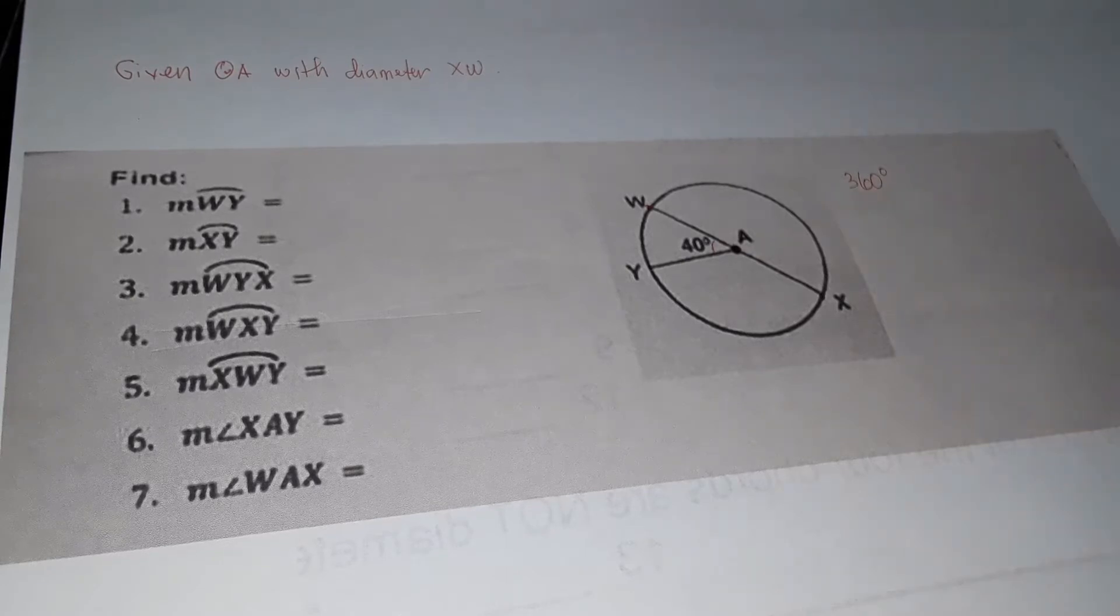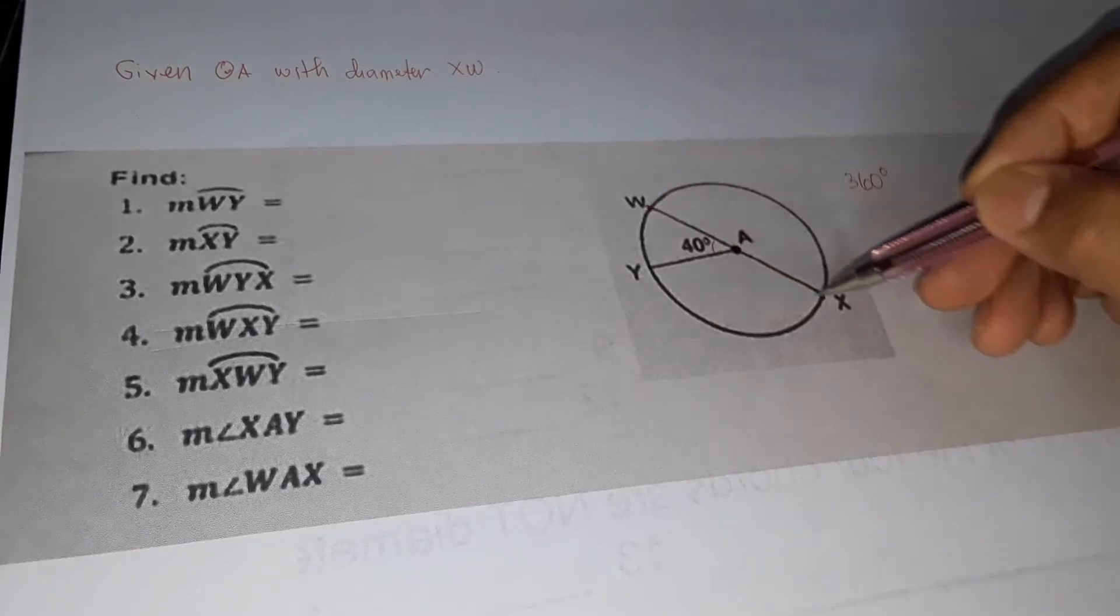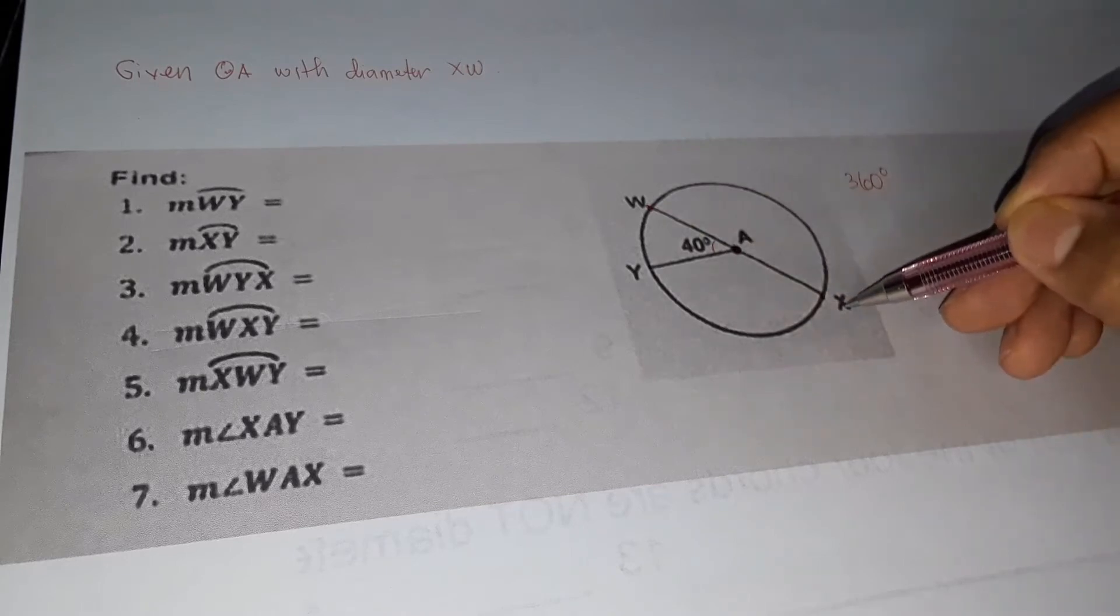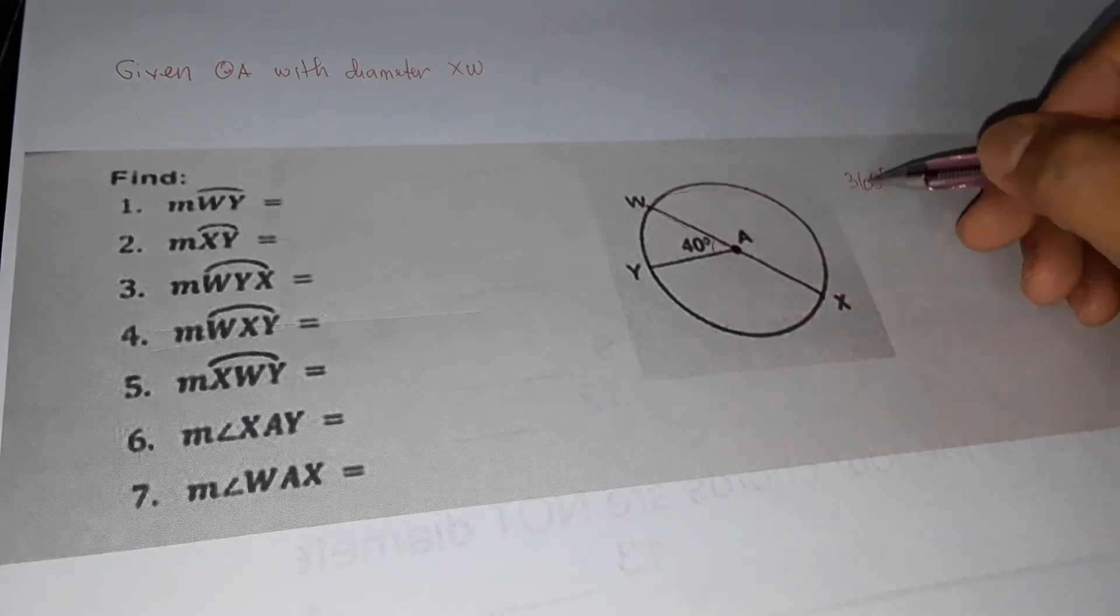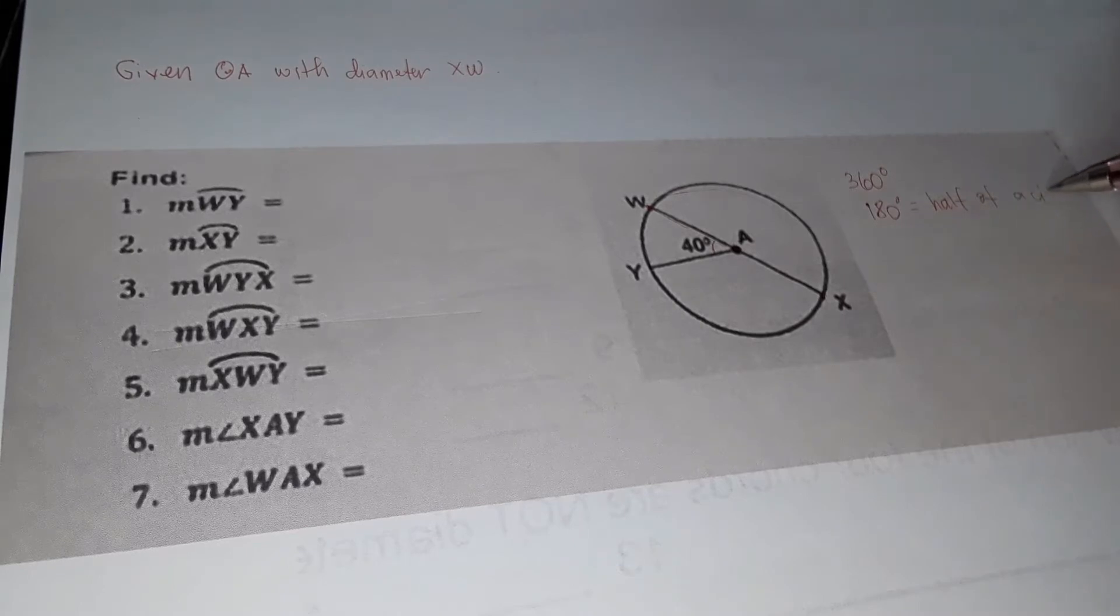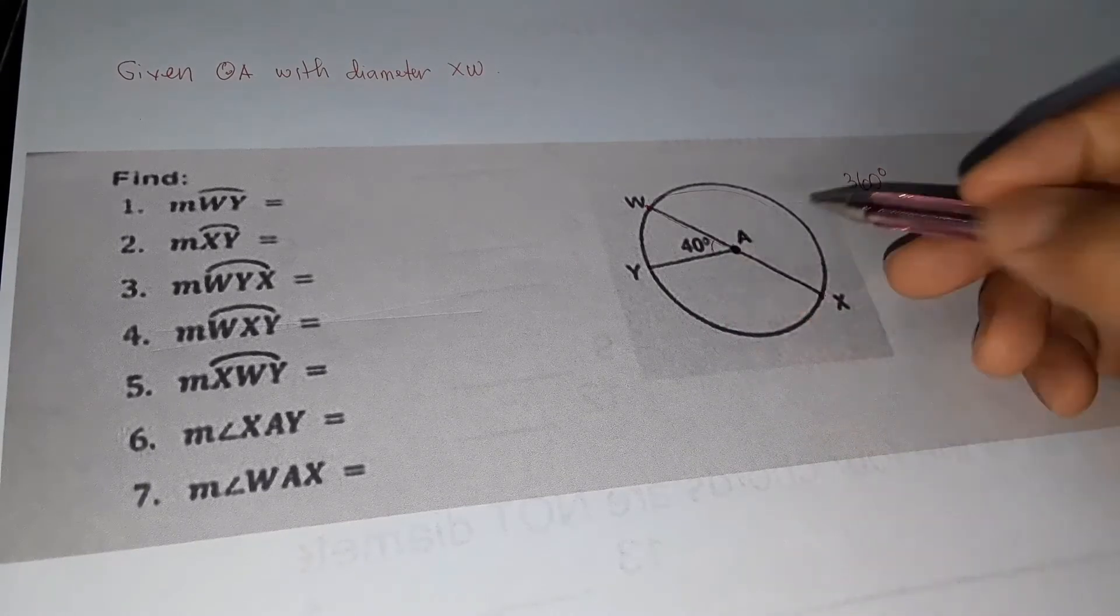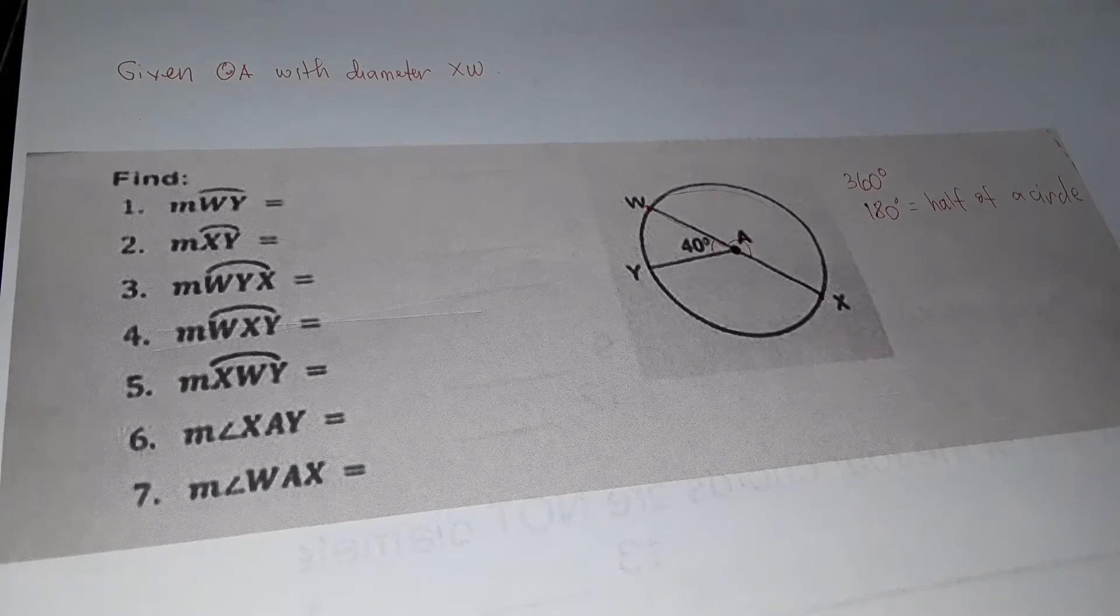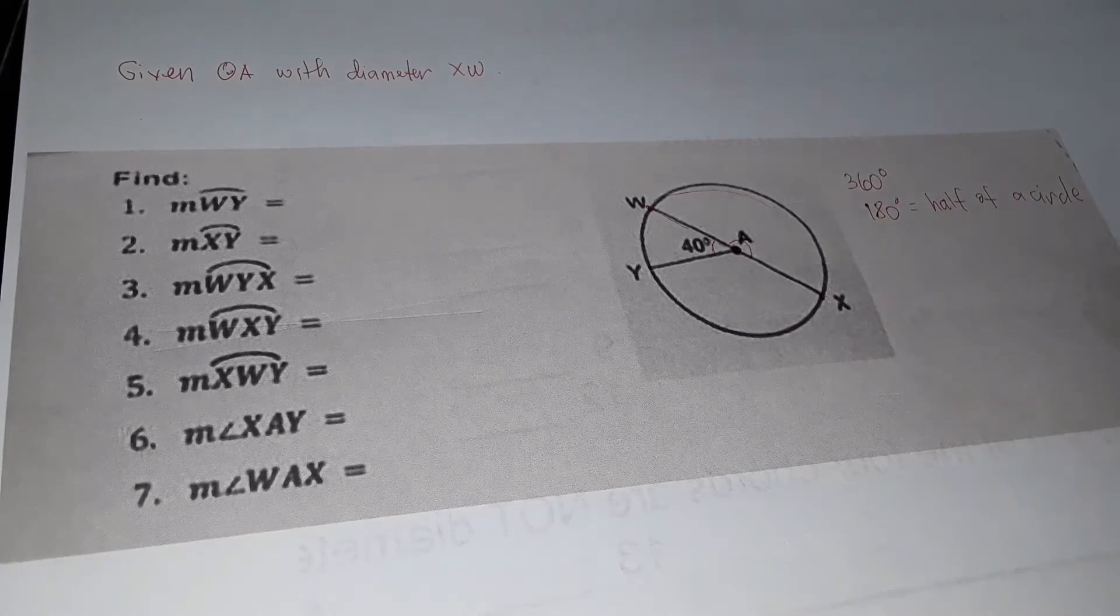Now, what is the measurement of the whole circle? The whole circle measures 360 degrees. And the diameter is half of this. We have a diameter here from this point to this point. The diameter is the line that passes through the center of the circle, a straight line. The measurement of a straight line or half of a circle is equal to 180 degrees. The arc also measures 180 degrees.